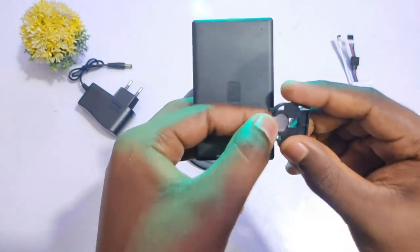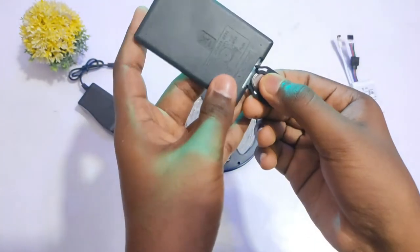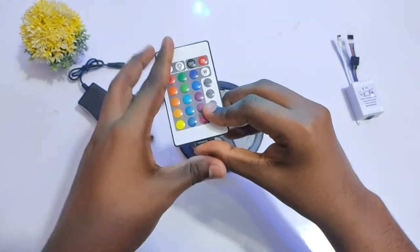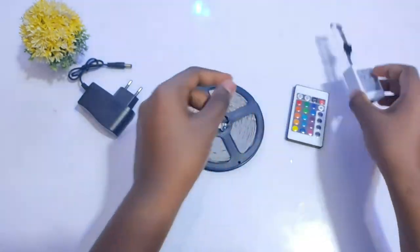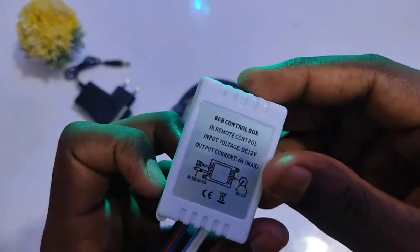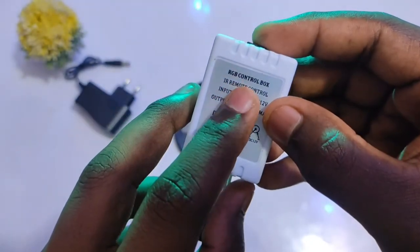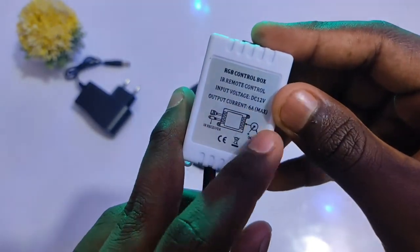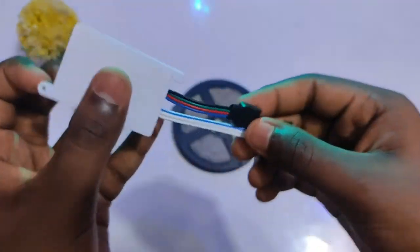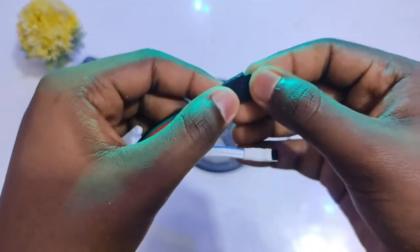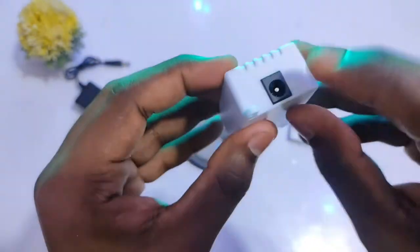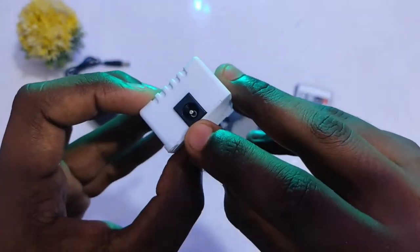And next is the strip controller. Here in the strip controller you can see that it is written as RGB control box and IR remote control. Input voltage is DC 12 volts, output current is max 6 amperes, and we can see a circuit diagram upon the controller. On the controller we get four male pins, the infrared receiver, and the 12 volts input here.